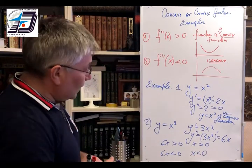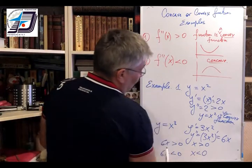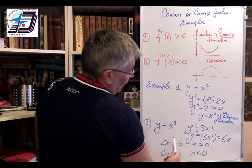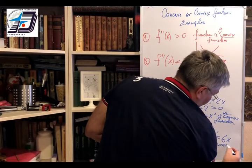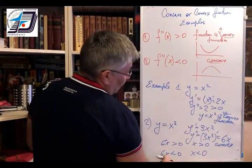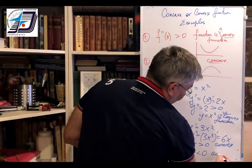So we can say that when x is positive, the second derivative is positive, so the function is a convex function. And when x is negative, it's a concave function.